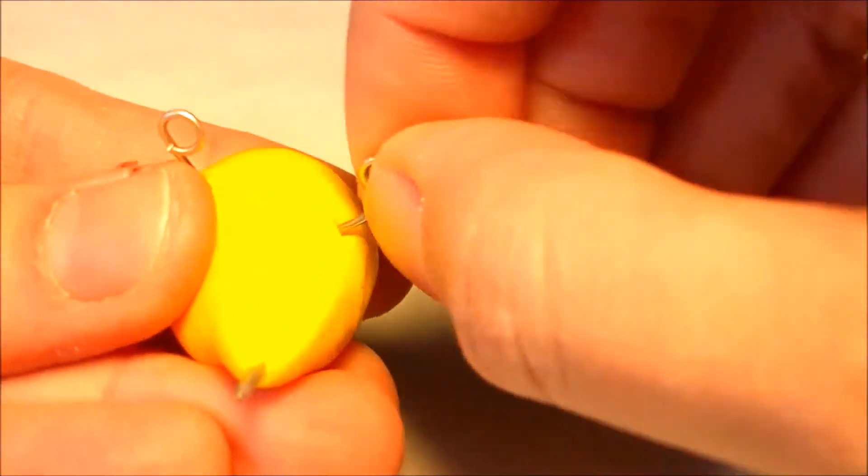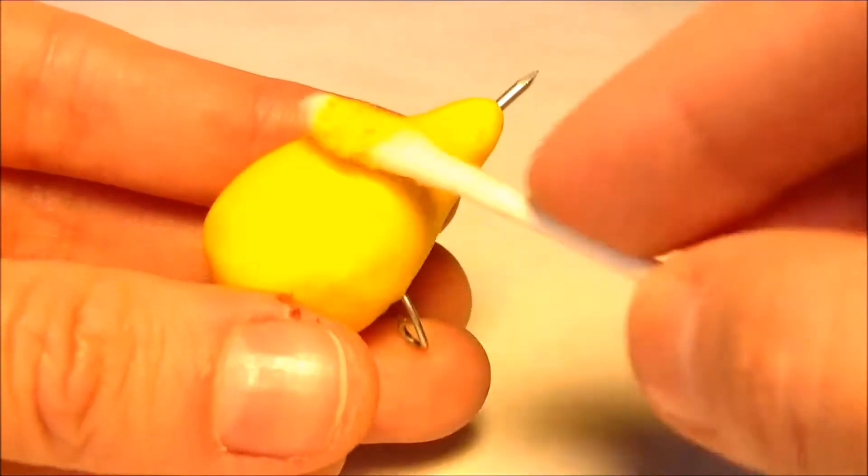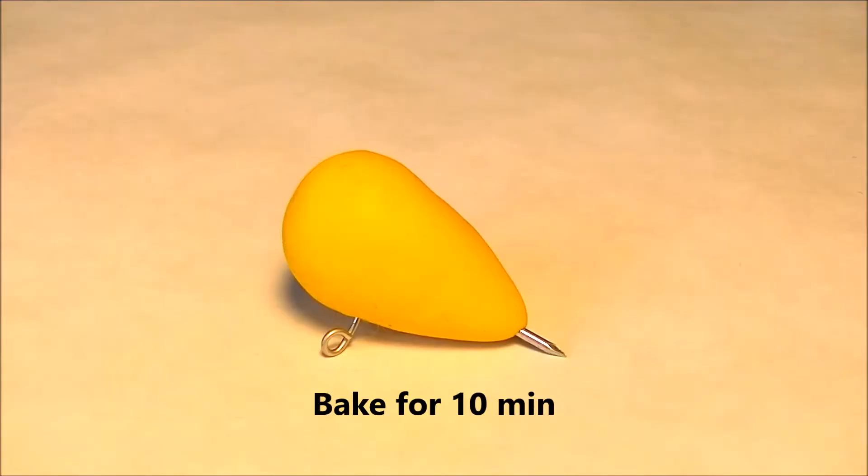Any lint that may have gotten onto your clay you can wipe off with a cotton swab and some nail polish remover. Now bake your clay for 10 minutes.